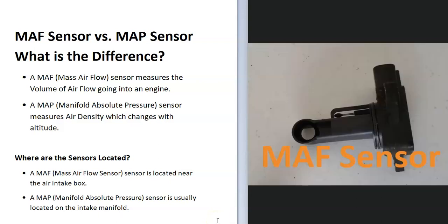The mass airflow sensor is the main sensor that the onboard computer uses to adjust the air-fuel ratio mixture going into the engine. It's located near the air intake box and just measures all the air that's going into the engine.